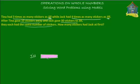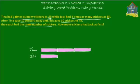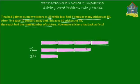Now, since Jill has got one pink box of stickers, how many will Tina have? The problem says that Tina has three times as many, so Tina will have three pink blocks of stickers — one, two, and three. That's our Tina. And the last guy, Jack, had four times as many stickers as Jill, so let's give Jack four pink blocks of stickers — one, two, three, and four.